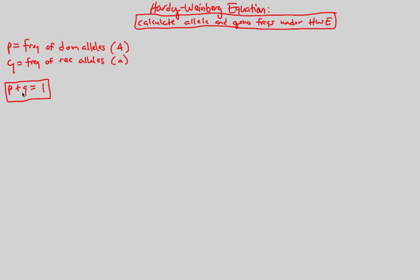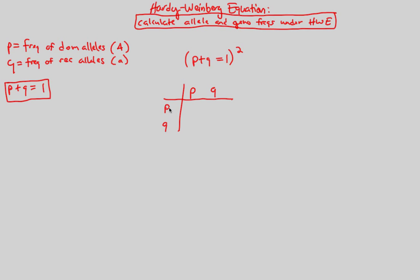Something even more powerful than the simple P plus Q equation is what we get when we square it. When we take P plus Q equals 1 and square both sides, we're essentially crossing an individual that has alleles P and Q with another individual that has P and Q — very much like a Punnett square. P times P gives P squared, P times Q gives PQ twice, and Q times Q gives Q squared.